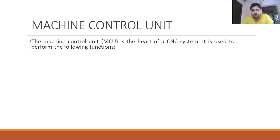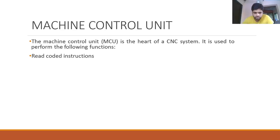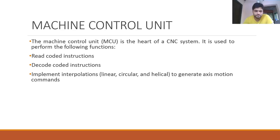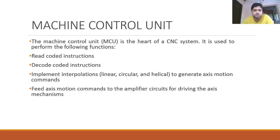The Machine Control Unit (MCU) is called the heart of the CNC system. When the program is received by the MCU, it reads and decodes the coded instructions, implements the interpolations — reading which are linear, circular, or elliptical — and generates axis motion commands fed to amplifier circuits for driving the axis mechanisms.